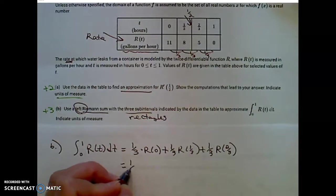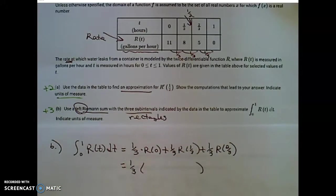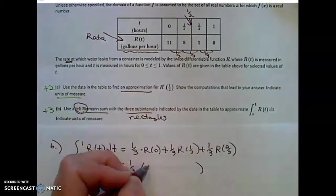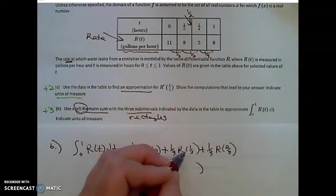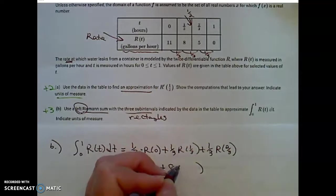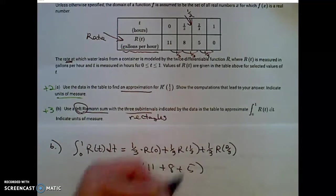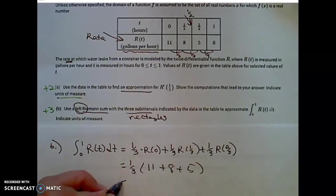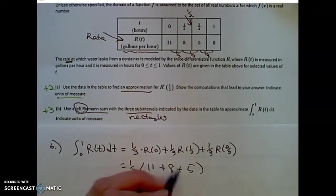I can factor out a 1 third if I want to make my work a little bit easier. R of 0 is 11 plus R of 1 third, which is 8, plus the function value at 2 thirds, which is 5. That is 1 third of 19 plus 5, which is 24, which is 8.